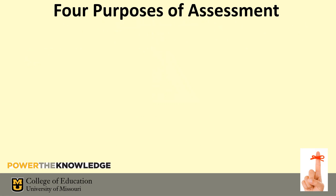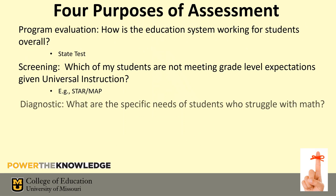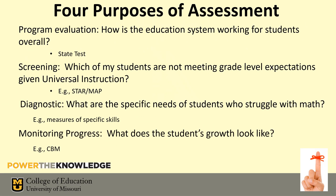Before we talk about how to answer those three questions, let's talk about the purposes of assessment — the data used to answer those questions. Essentially there are four purposes. The first deals with program evaluation — that's how we use the state test. Within the RTI framework, screening, diagnostic, and monitoring student progress are the three decisions we make. The first screening question is: which kids are not making grade-level expectations? That's screening, using things like the STAR or Measures of Academic Progress, the MAP.